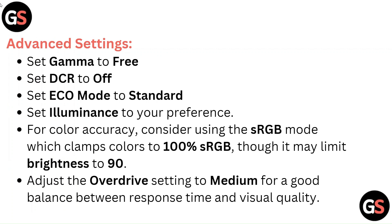For color accuracy, consider using the sRGB mode which clamps colors to 100% sRGB, though it may limit brightness to 90. Adjust the overdrive setting to medium for a good balance between response time and visual quality.